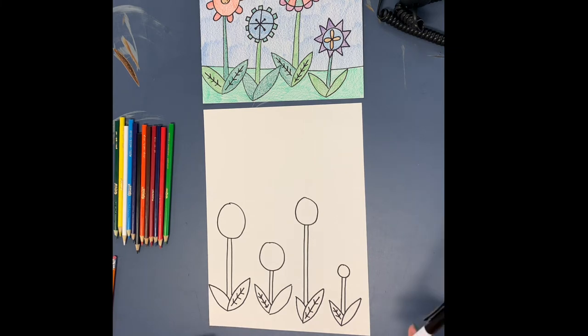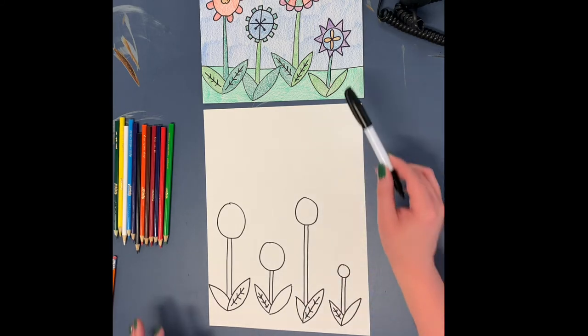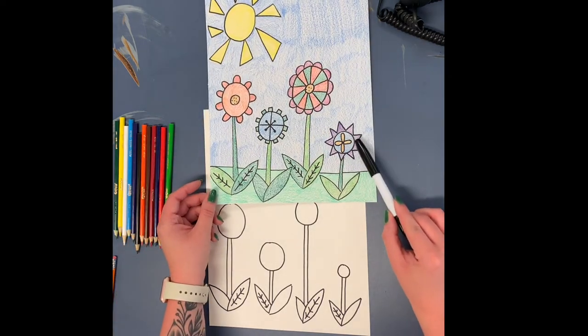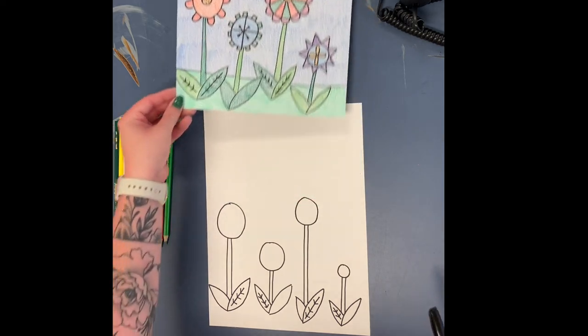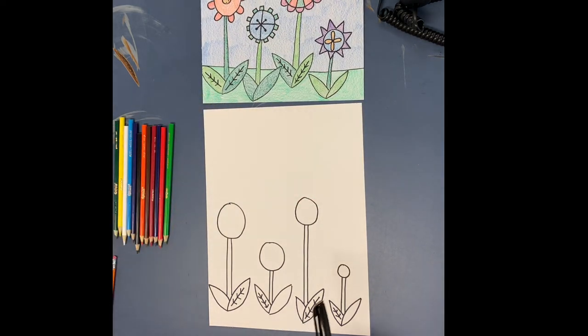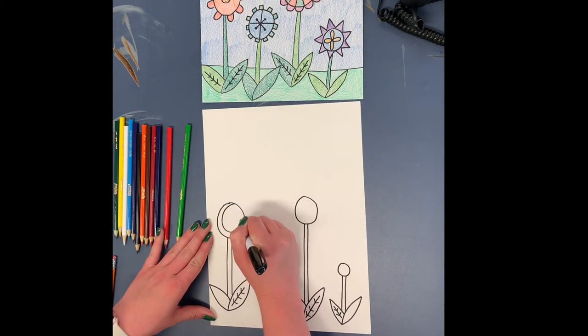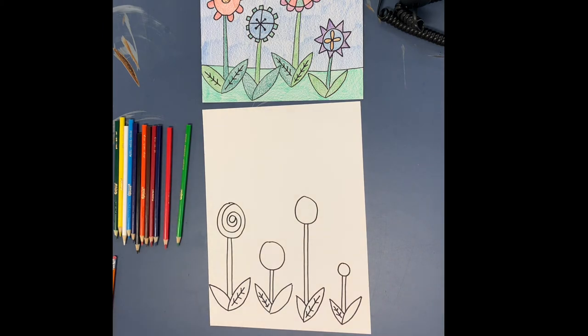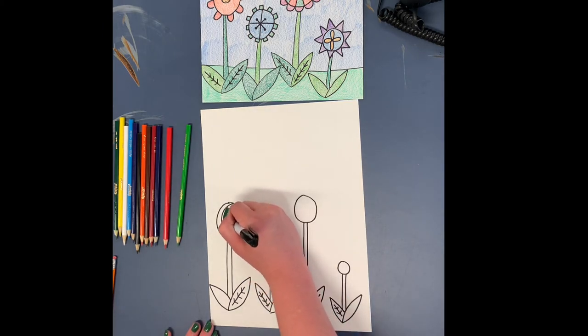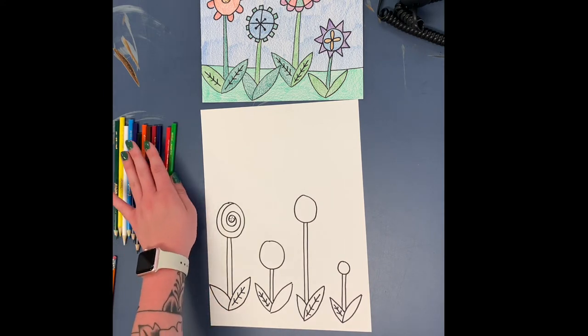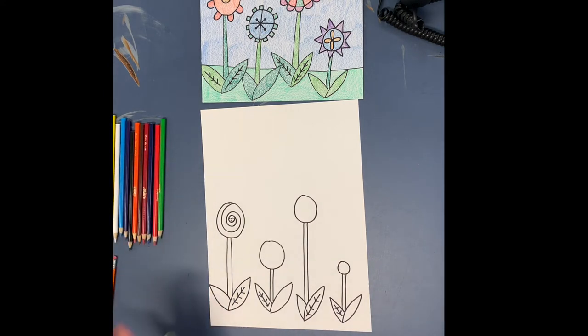Now we are going to move on to the flowers, to the actual petals and centers. So if you look at mine here, I have different types of petals, different types of centers. So I'm going to just show you some different things that you can do. If you have an idea that I don't do, please do it. For this one over here, I'm going to do a swirl going in. And then it'll have a circle at the center. I'm going to do some little polka dots on that center. And I think that's all I'm going to do on the center part.